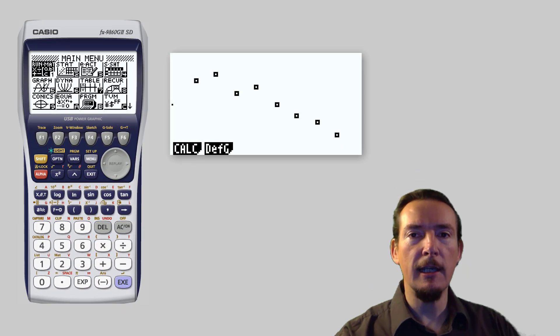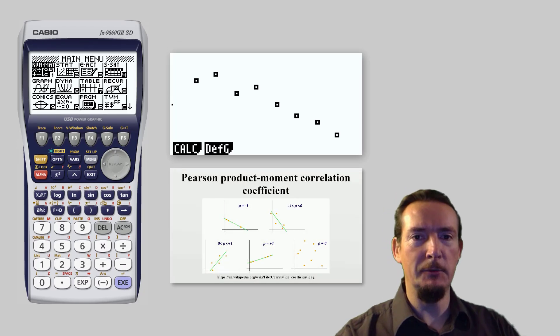So that's all for this video. You should now know how to use your Casio graphical calculator to plot a scatter graph and to find PMCC the easy way.